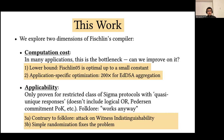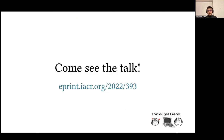With regards to applicability, we show that the folklore is actually wrong. We give a new attack on witness indistinguishability of Fischlin's transform in certain contexts, and we show that this attack can be fixed by a simple randomization mechanism. I hope to see you at the talk, and you can also find our work online as an ePrint at this link. Thanks.